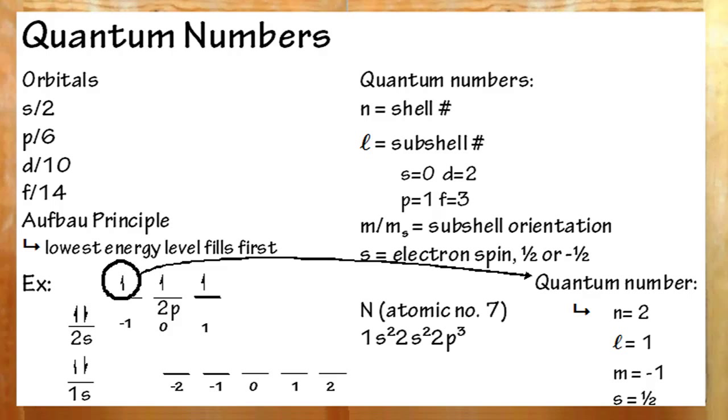Quantum numbers. N is your shell number, your big number here. L is dependent upon if you're working with s, p, d, or f. m is your subshell orientation. Middle line is zero. Minus one this way, add one this way. And s is your electron spin. Positive one half if it's spinning up, negative one half for down.